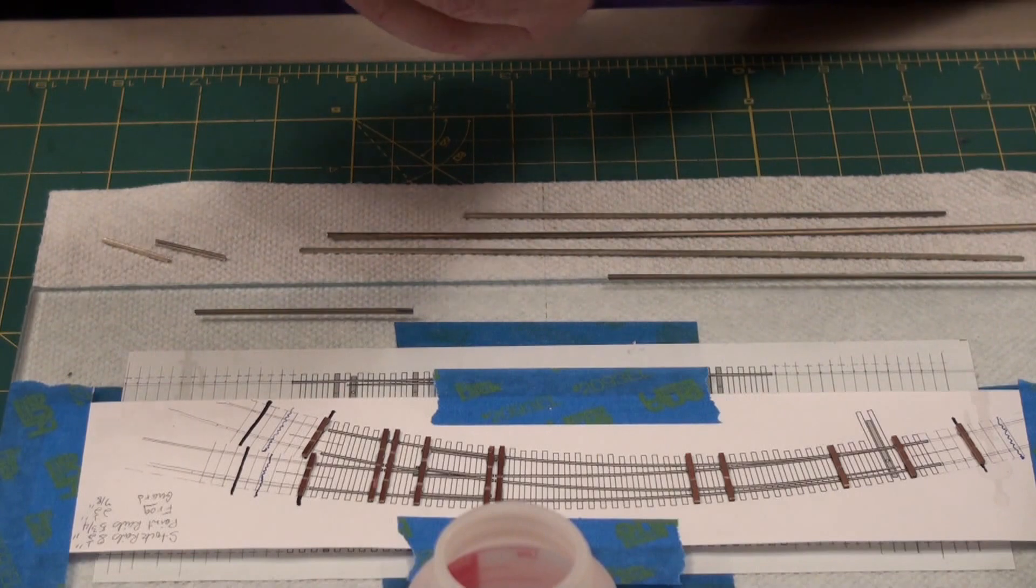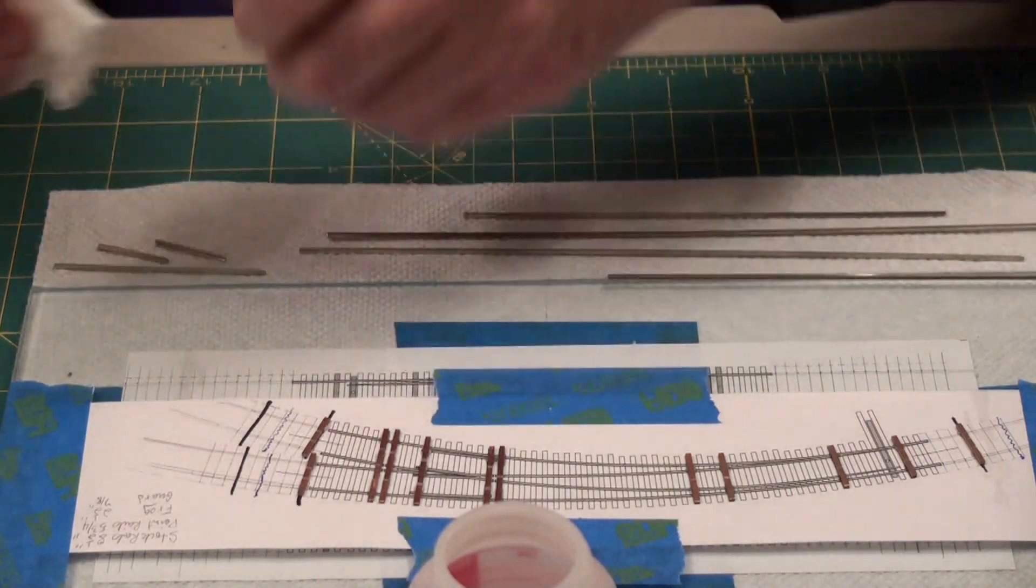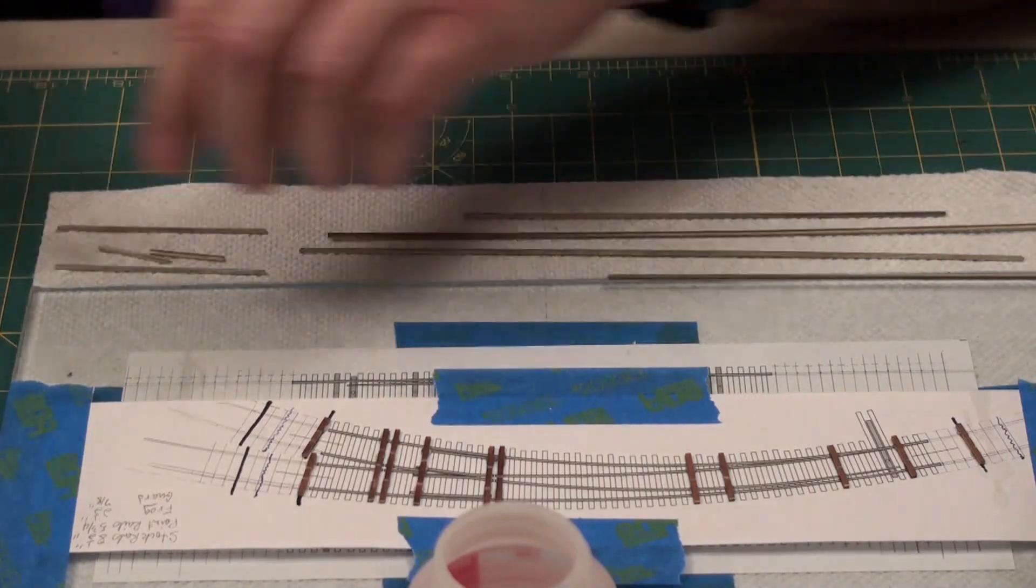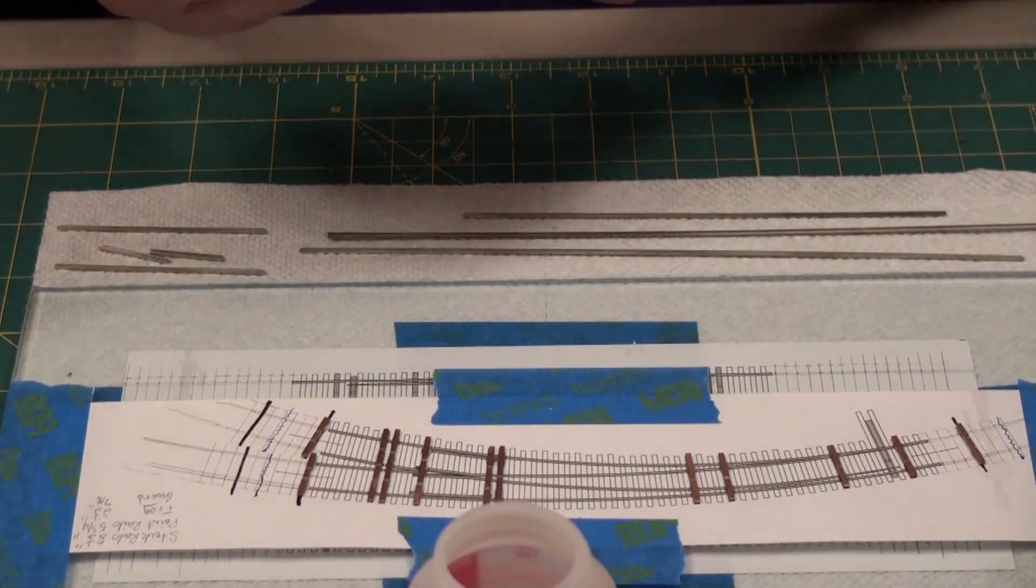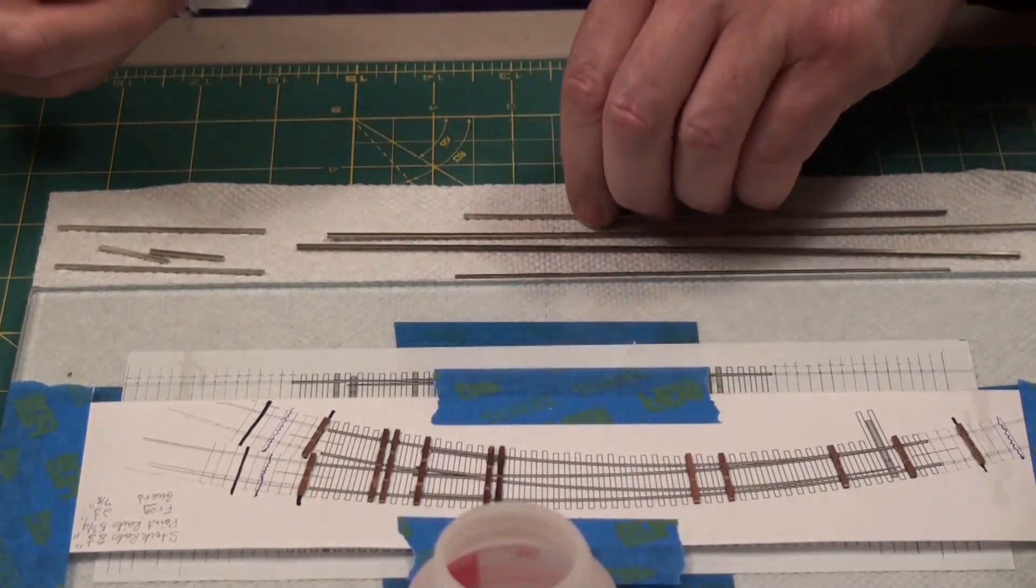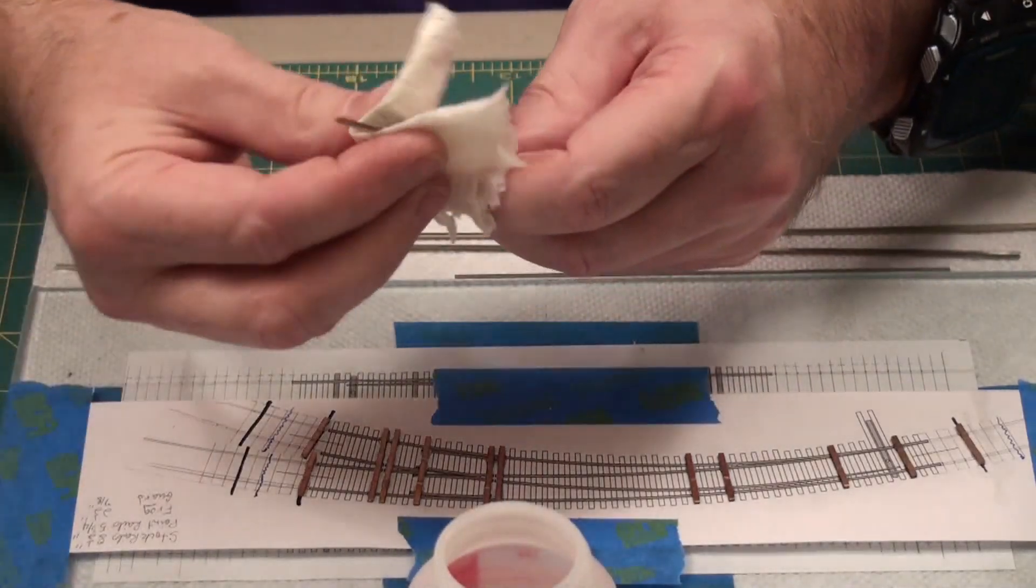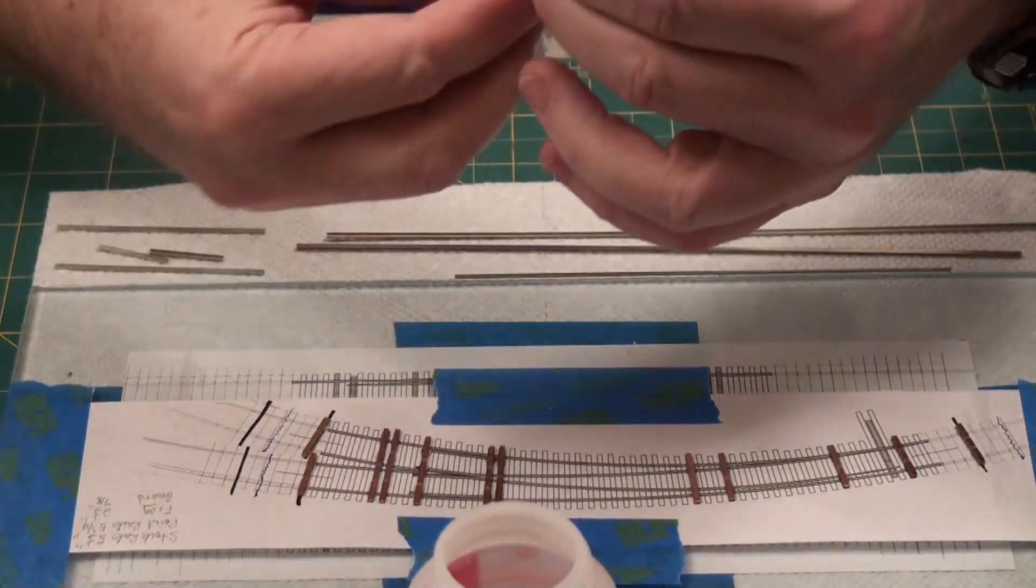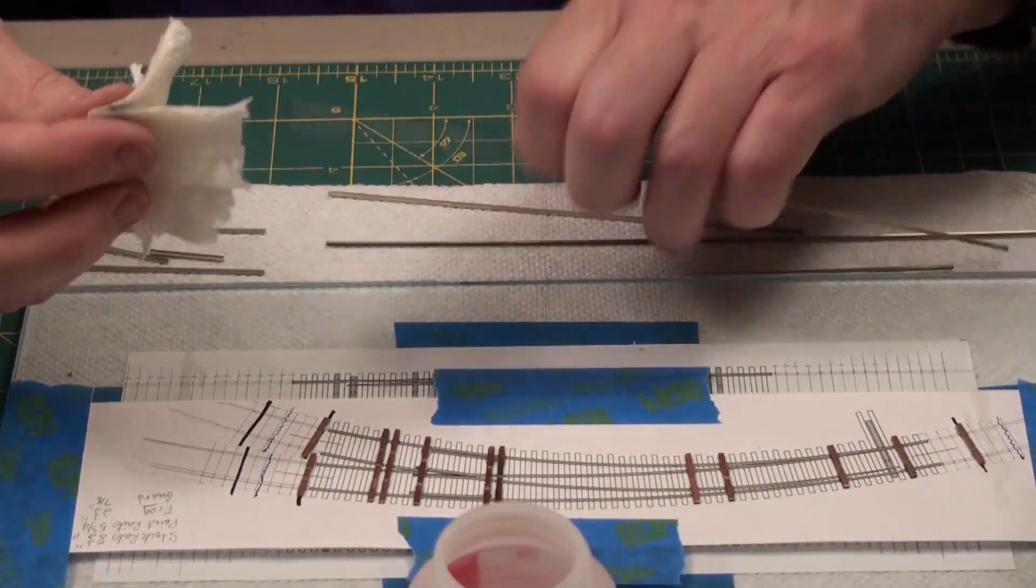Plus if you did any marking at all as you were doing your cutting with a sharpie then this would take that marking off as well as being isopropyl alcohol. It'll take off stuff pretty good. I just like to make sure they're nice and clean.